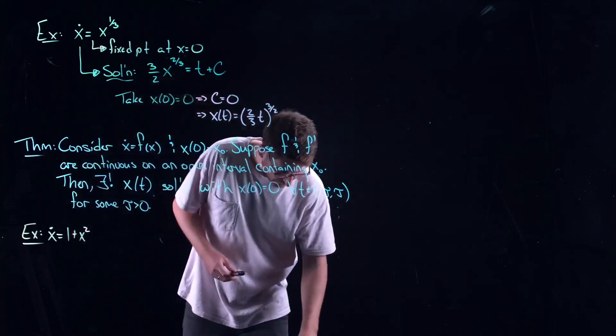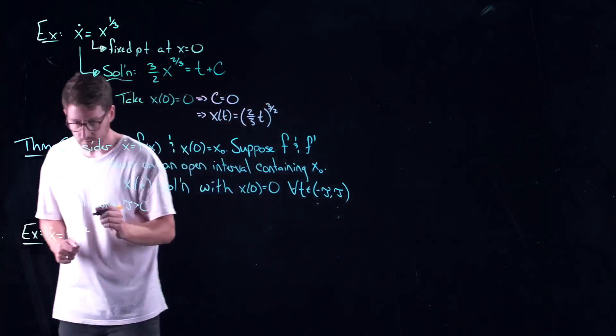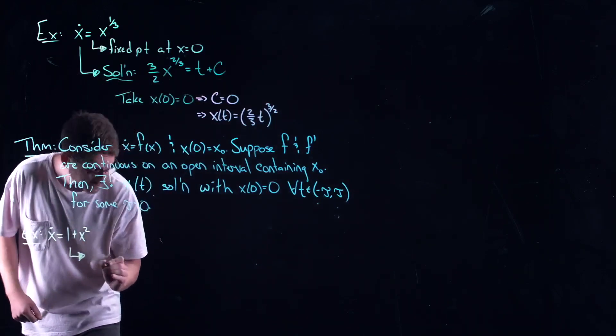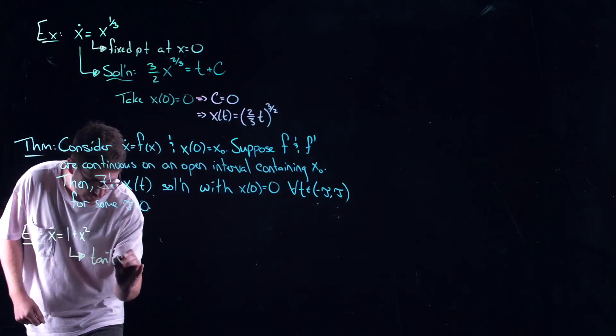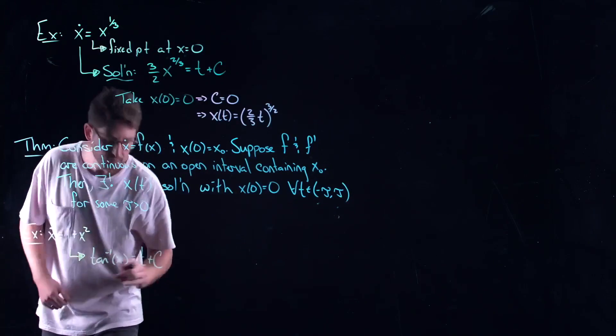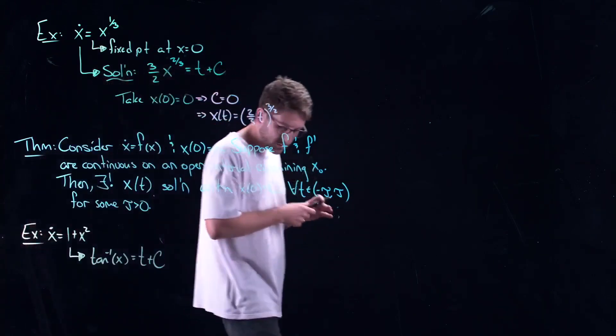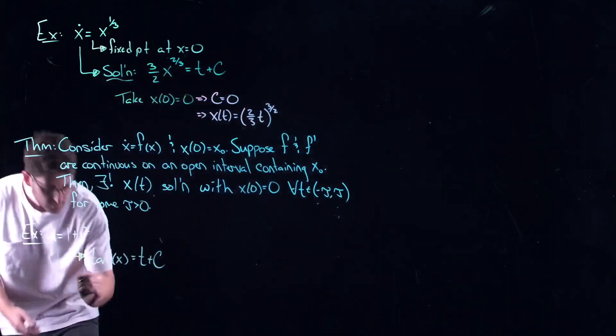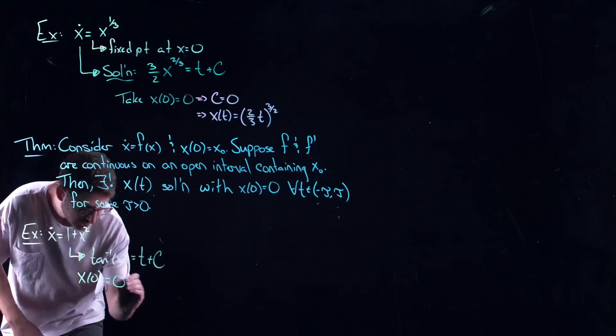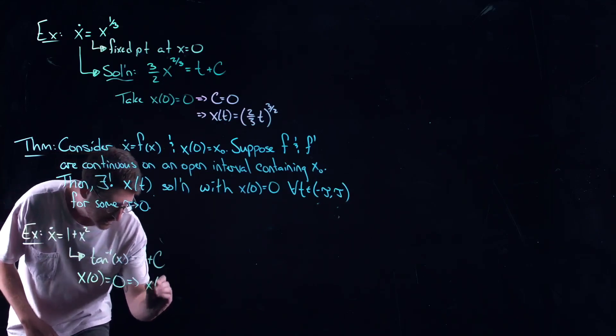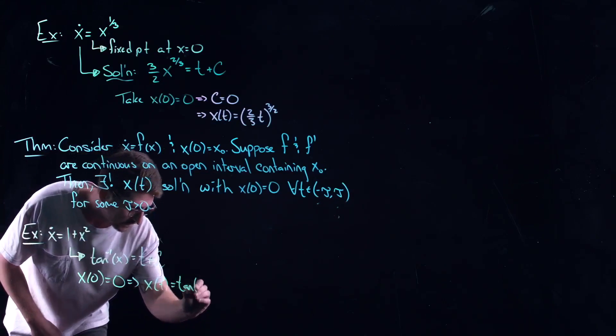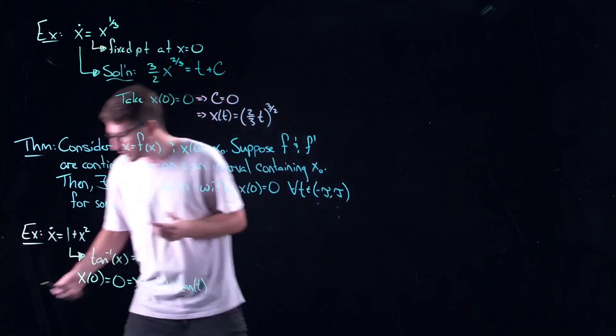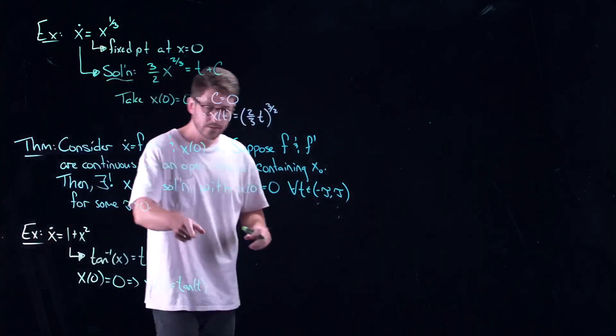As long as these are satisfied it says that my solution can move forward and backward in time for some amount of time but it doesn't say for all time. We should be very, very careful here. You can actually solve this thing. So if you find a solution to this you can get tan inverse of x is equal to t plus c. So again I'm just using separation of variables. I'm only doing this for x positive. And let's do x of 0 is equal to 0 just so I can get rid of that c and this gives me x of t is equal to tan of t.